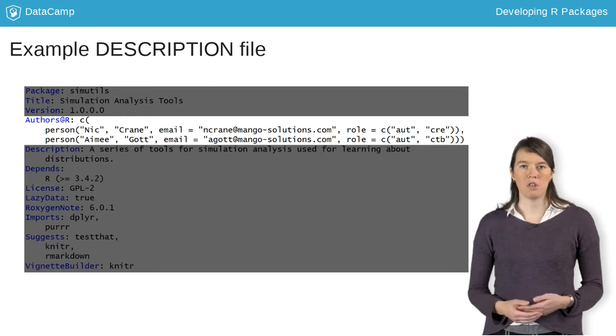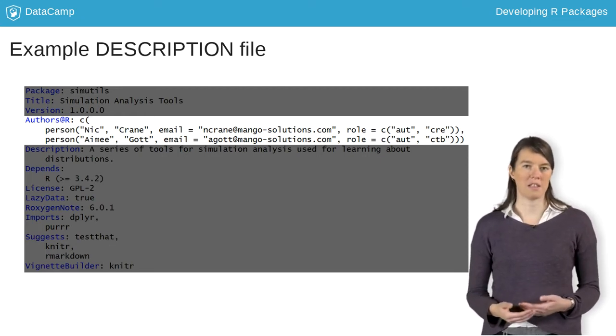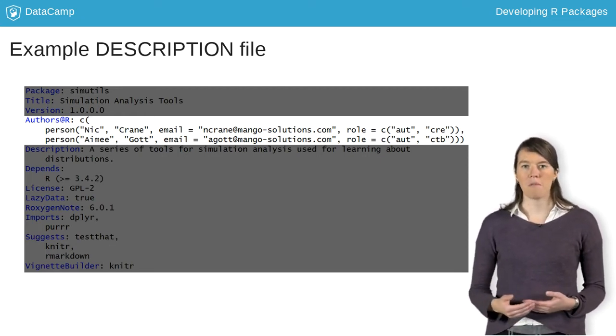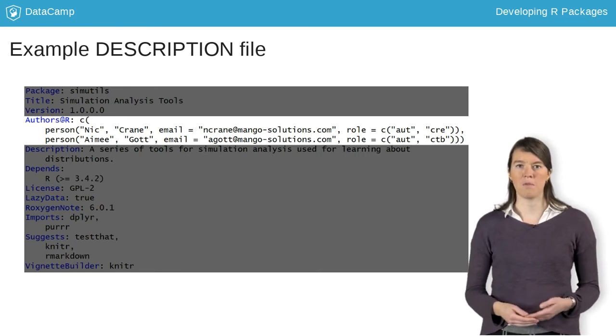People can have multiple roles, you just supply them as a vector, like in the example here. You can also have multiple people. You simply need to provide a vector of person calls, one for each person.